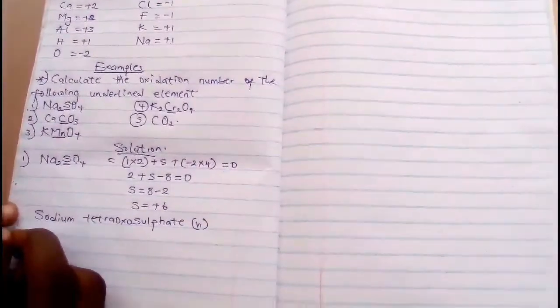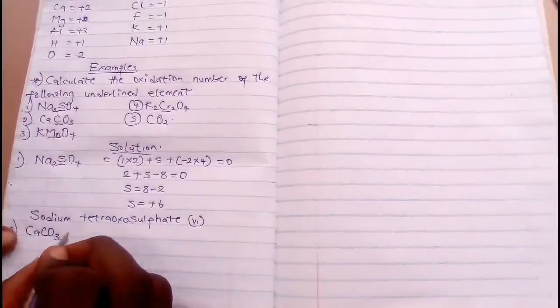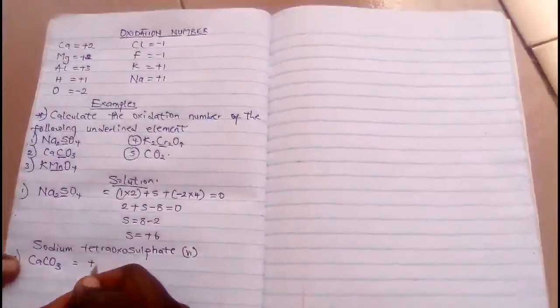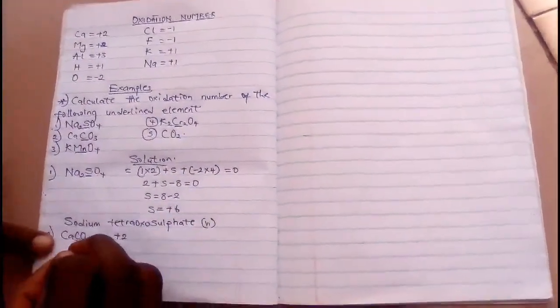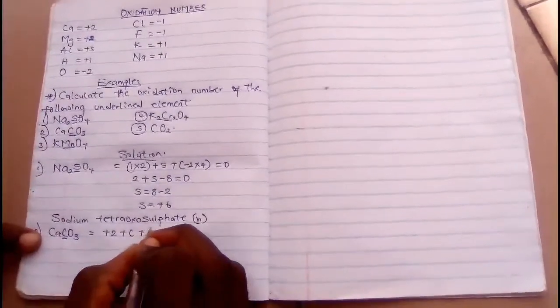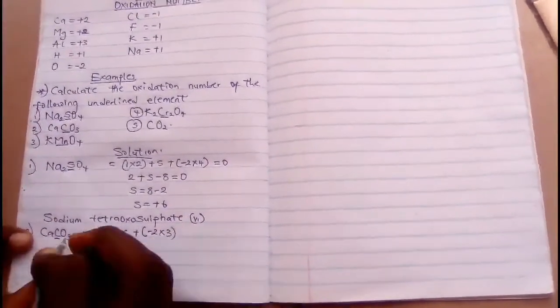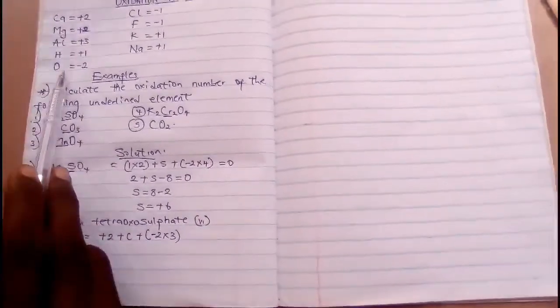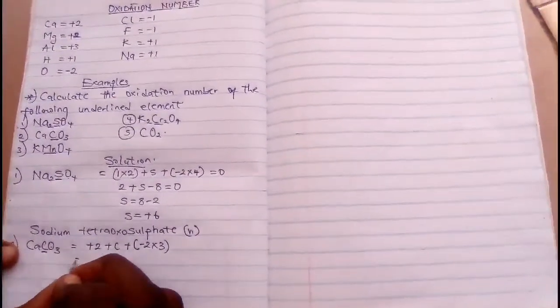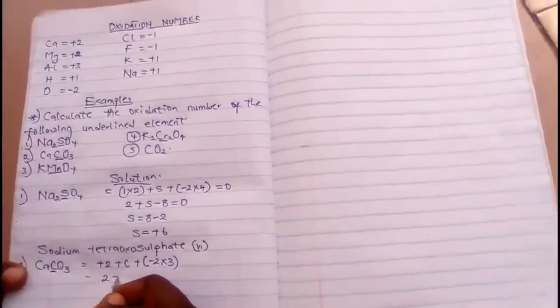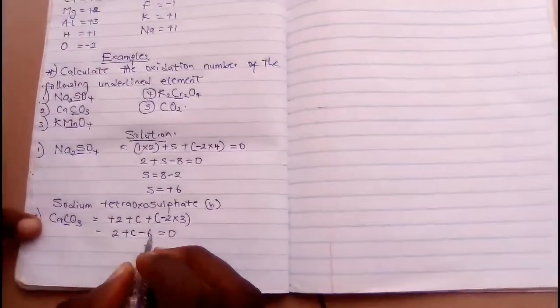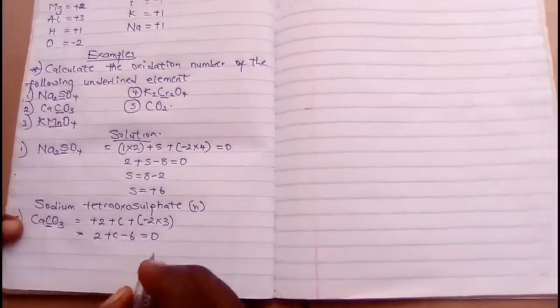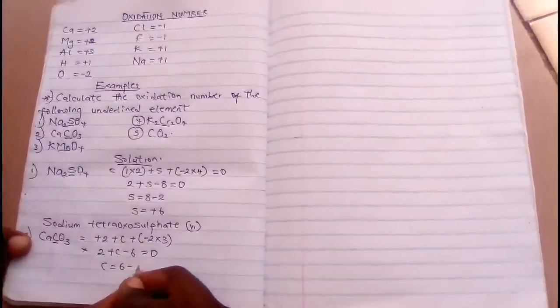So let me go straight to number two. If you are told to find the oxidation number of CaCO₃, Ca is +2 from here. Let's write Ca +2, we are looking for carbon C, plus brackets -2 times 3. -2 is the oxidation number for oxygen, -2 times 3. It will give you 2 + C - 6 = 0.